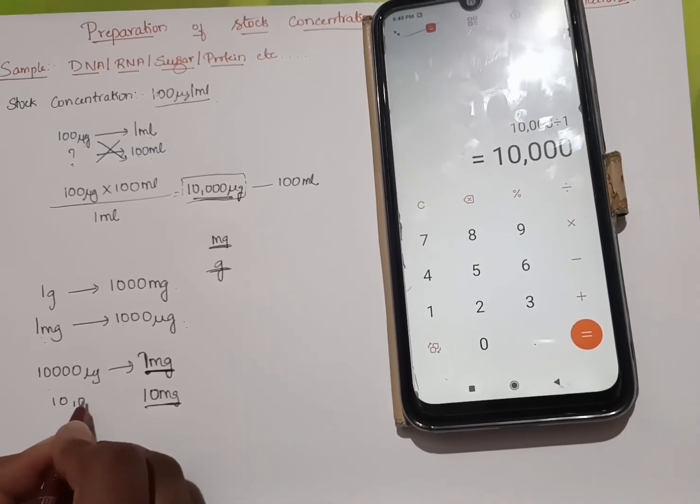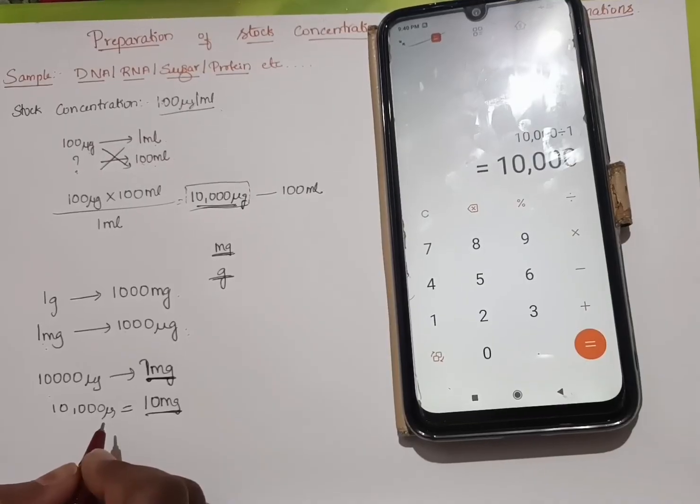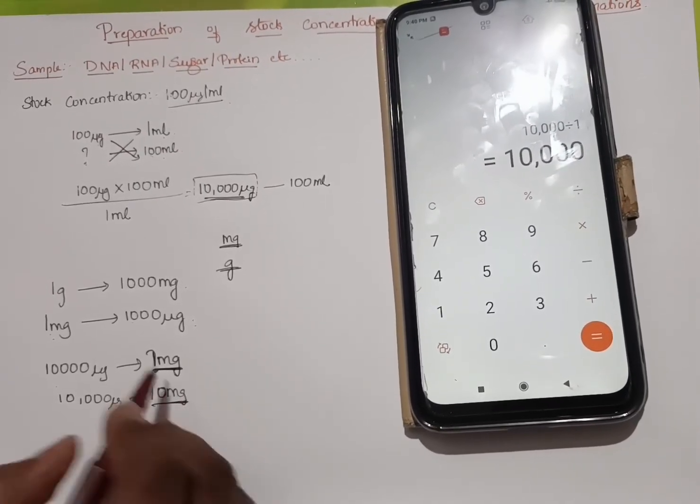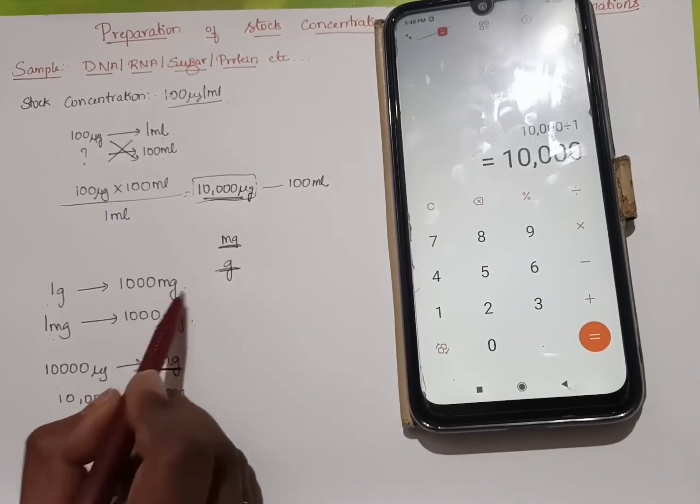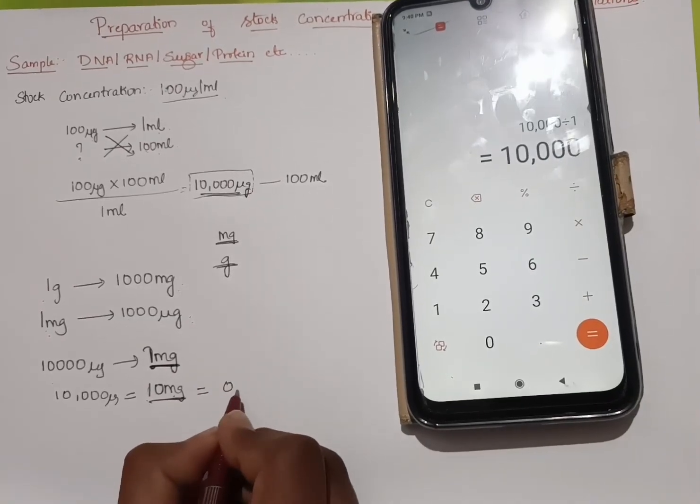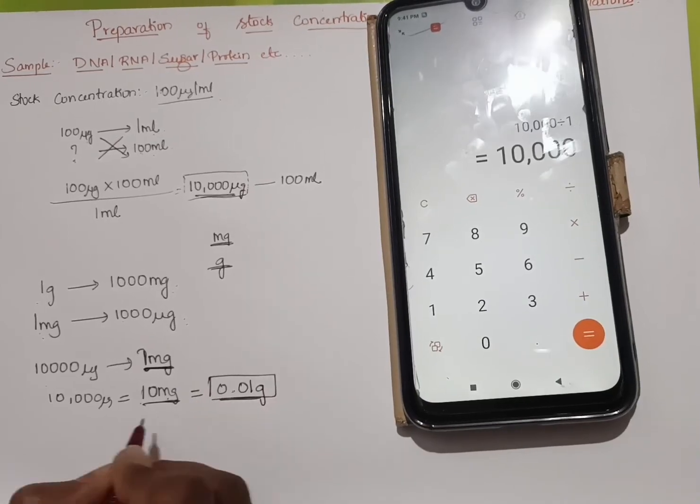10,000 µg equals 10 mg. Now, if 1 gram is 1000 mg, if 1000 mg is 1 gram, then 10 mg will be how many grams? It will be 0.01 grams.